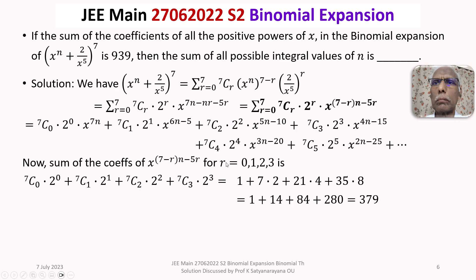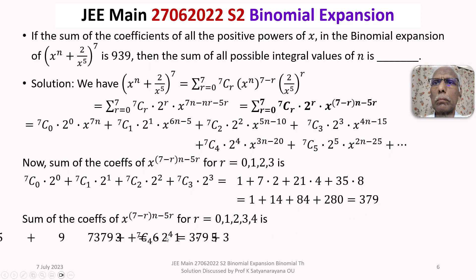Let us add one more term, r=4. So the sum of coefficients for r=0,1,2,3,4 is 379 + 7C4·2^4 = 379 + 35×16 = 379 + 560 = 939. We have reached the required total. So the powers of x must be positive for r=0,1,2,3,4 and the remaining powers (for r=5,6,7) must be negative.